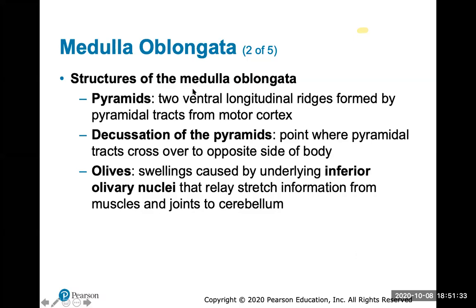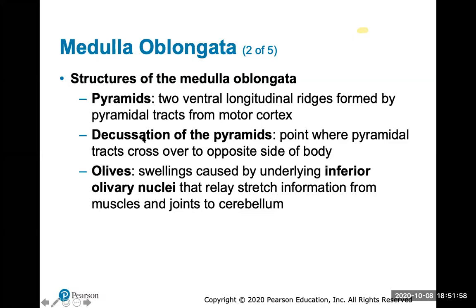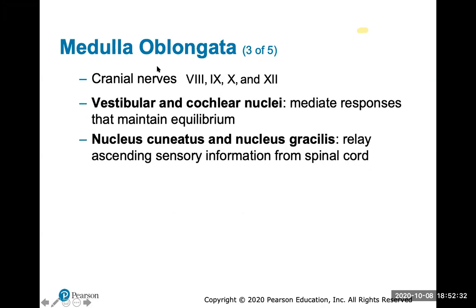Structures of the medulla oblongata include the pyramids — ridges formed by pyramidal tracts from the motor cortex. Decussation of the pyramids is the point where these pyramidal tracts cross over to opposite sides of the body; decussation means crossing over. Many times, sensory impulses from the right side of the body will decussate in the pyramids of the medulla oblongata and travel up to the left side of the brain.